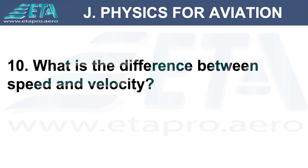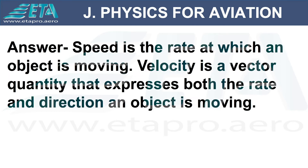What is the difference between speed and velocity? Answer: speed is the rate at which an object is moving. Velocity is a vector quantity that expresses both the rate and the direction an object is moving.